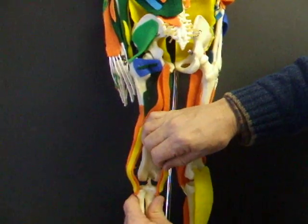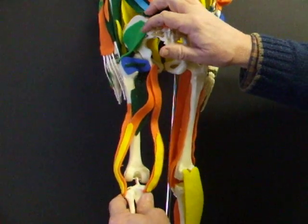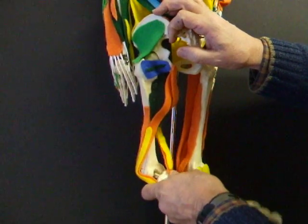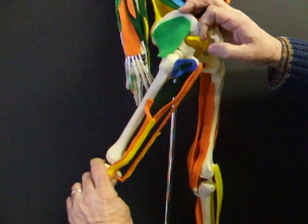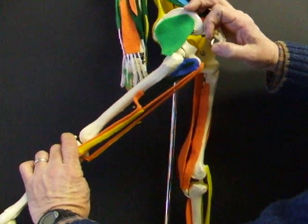So hamstrings flex the knee, extend the hip, and they have to be long enough to allow full knee extension with hip flexion.